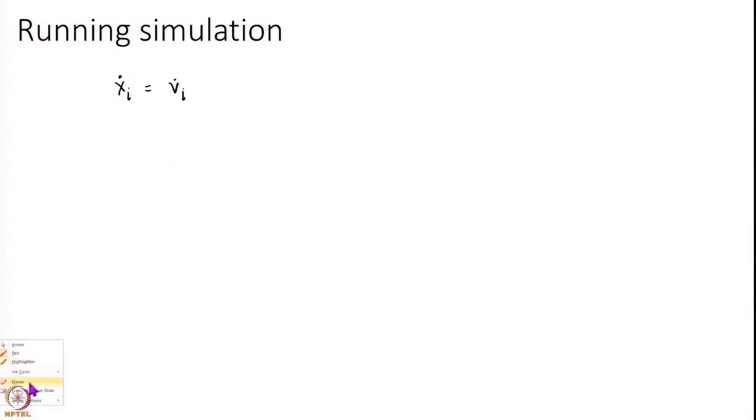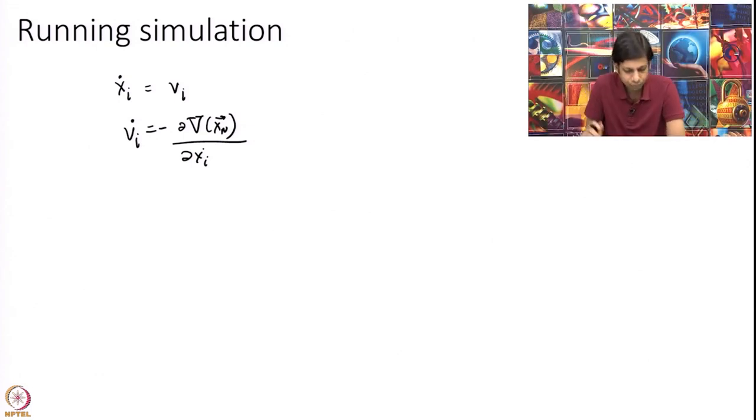Now once I have initial conditions, what I have to really solve is a set of differential equations: xi dot equal to vi and vi dot equal to minus del potential over del xi. So these are nothing but differential equations. Computers are extremely good at solving differential equations. Starting from perhaps the 60s, people have figured out ways of how to solve these differential equations. There are a number of numerical schemes, one uses something like velocity Verlet, there are many other Runge-Kutta methods.